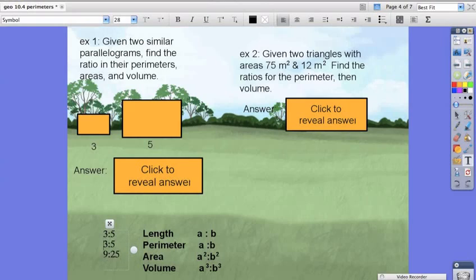And the ratio in their volumes should be 3 cubed to 5 cubed, which is 27 to 125.